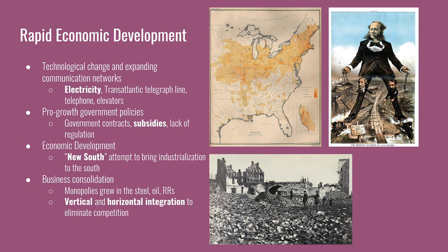International communication also grew incredibly faster when a transatlantic telegraph cable was successfully established in 1866, reducing the time it took to communicate with someone in Europe from two weeks to two minutes. Pro-growth government policies included government contracts given to private companies, like those to build railroads or supply American Indian reservations. Government subsidies were given to railroads in the form of land grants, and the absence of corporate regulation itself could be considered a pro-business policy.